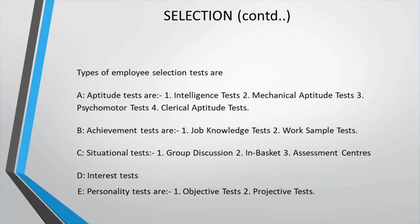The second type is achievement tests — the job knowledge test checks knowledge for doing that particular job. For example, if a trainer is being selected, does he have the right knowledge, expertise, and skills to be a trainer? The work sample test gives the candidate some work and asks him to do it.